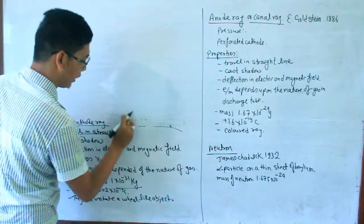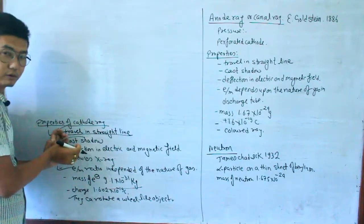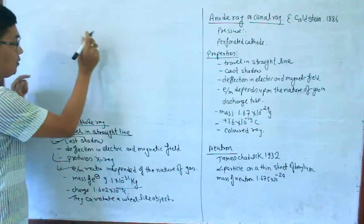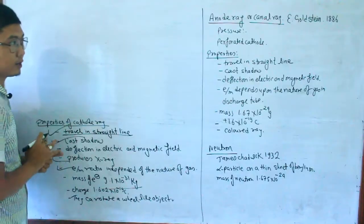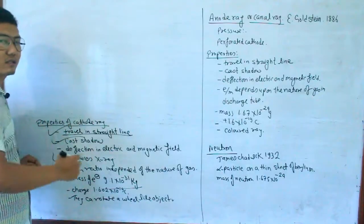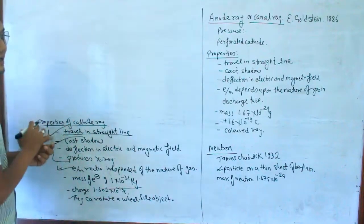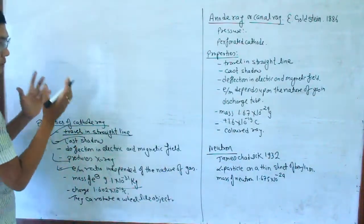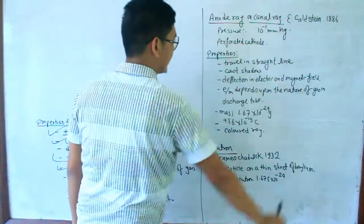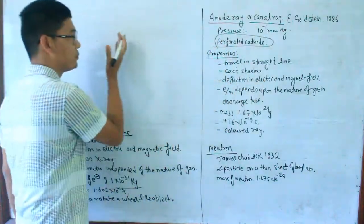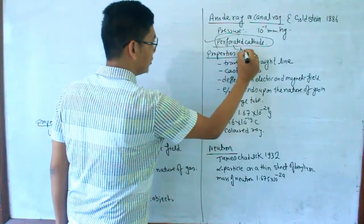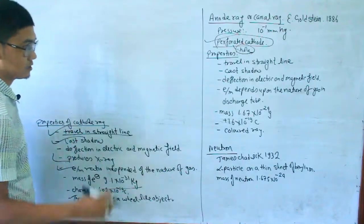Another important ray is the anode ray, also called canal ray. The electron is associated with the cathode ray. The anode ray — canal ray — was discovered in 1886 by Goldstein. In this experiment, the pressure is 10 to the power minus 1 mmHg, and a perforated cathode with holes is used.